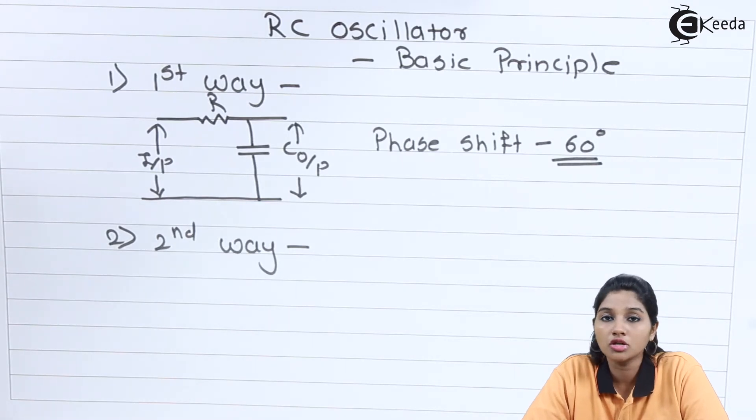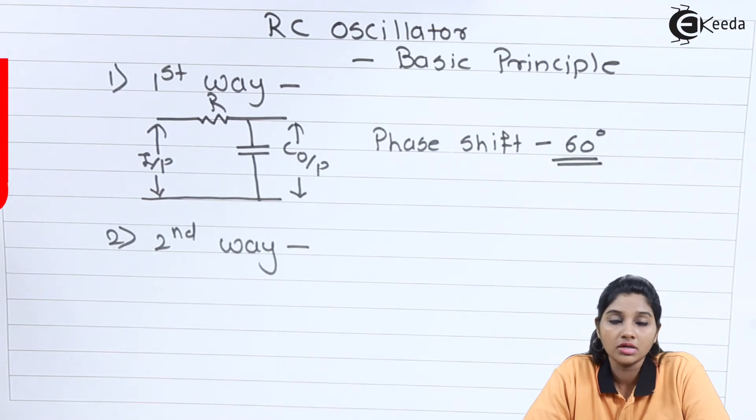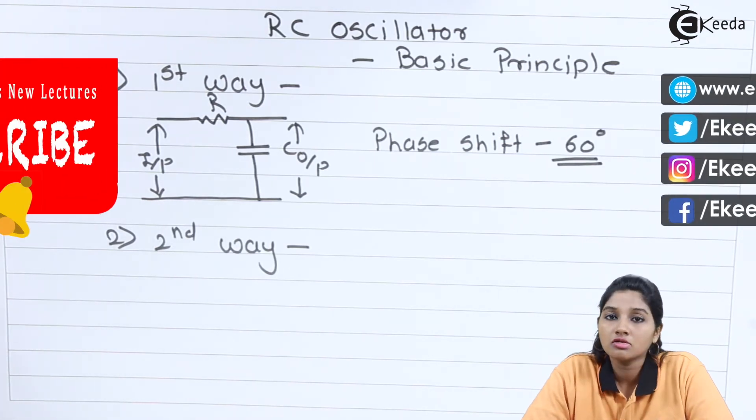So RC oscillators are basically used for producing low frequency, that means audio frequency signal. And in this case we are using RC phase shift network for producing additional phase shift of 180 degrees. I hope you understand this topic.